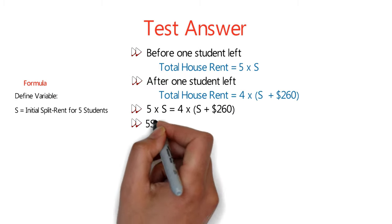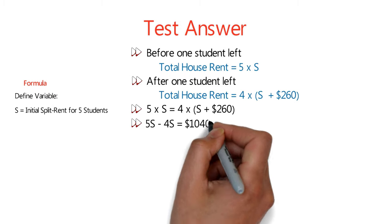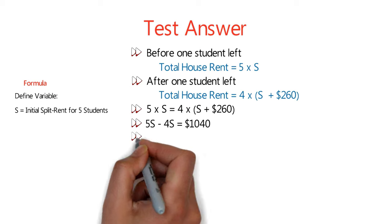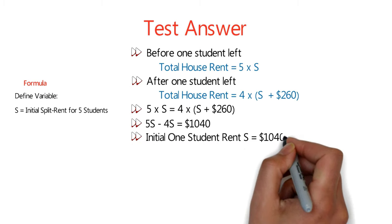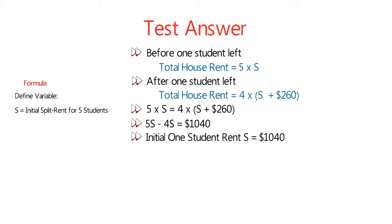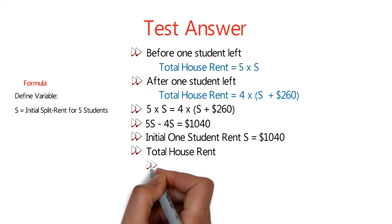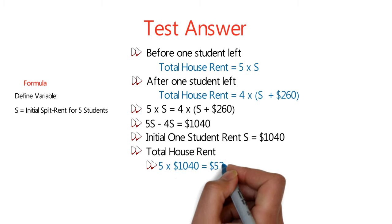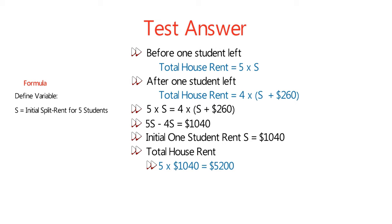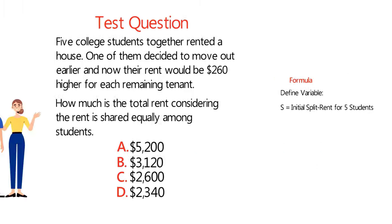So S equals $1,040, representing one student's initial rent. To calculate total house rent, multiply 5 by $1,040, which equals $5,200. The correct answer is choice A, five thousand two hundred dollars. Hopefully you've nailed this question and now know how to answer similar problems.